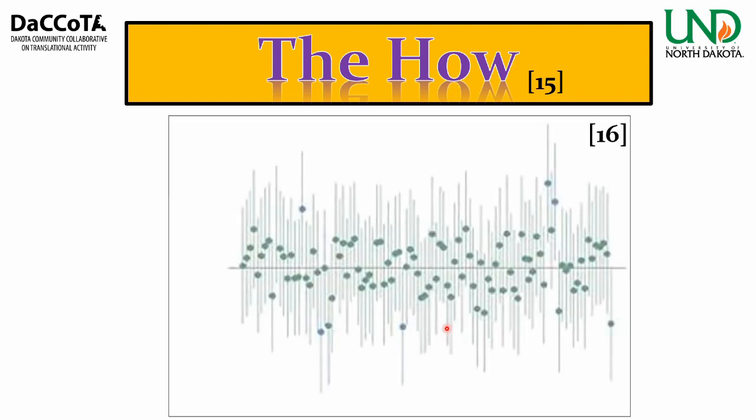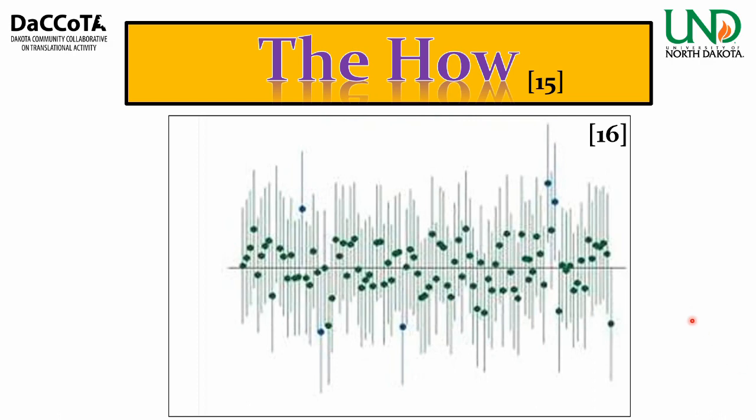With Monte Carlo, what's happening is you define a domain of possible inputs, generate inputs randomly from a probability distribution over the domain, perform deterministic computation on the inputs, and then aggregate the results.